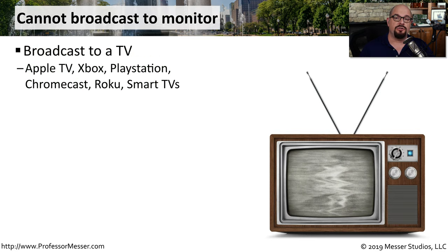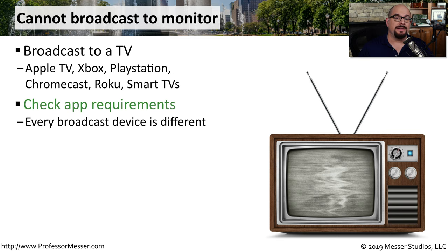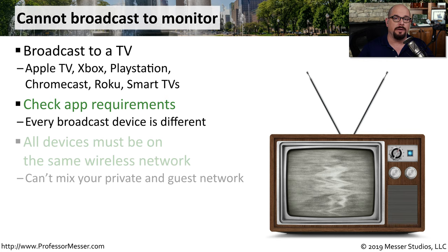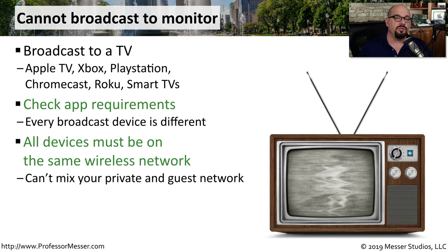Our mobile devices have the ability to stream information to a third-party monitor or television. Often these devices are running an Apple TV box, a PlayStation, a Roku, or some other third-party streaming component. Different mobile devices and different streaming devices will also have different types of software used to perform this broadcast or streaming function. You want to check the requirements of these different devices and make sure that they are all running compatible software. Another important consideration is that your mobile device and your smart TV or connected component are all on the same wireless network — you won't be able to stream between a private network and a guest network. Both devices have to be connected to the same wireless SSID.